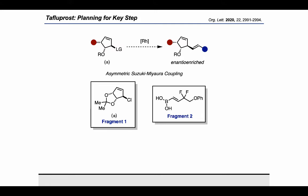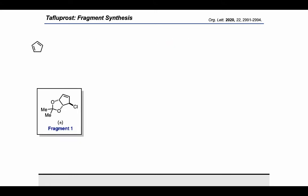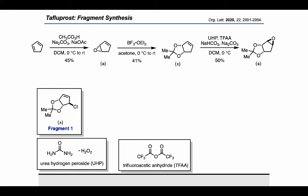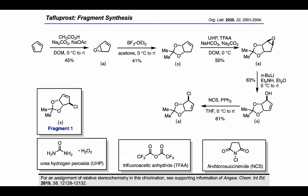First, let's take a look at fragment 1. To make fragment 1, they started with cyclopentadiene and carried out an epoxidation with peracetic acid, and converted the resulting epoxide into a 1,3-dioxolane by treatment with ethereal BF3 and acetone. Then they used urea hydrogen peroxide and trifluoroacetic anhydride to carry out an epoxidation on the remaining alkene to arrive at this epoxide. Treatment of the epoxide with n-BuLi and diethylamine resulted in opening to give this allylic alcohol, which could be treated with NCS and triphenylphosphine to give the allylic chloride with the relative stereochemistry shown, obtaining fragment 1 as a racemate.